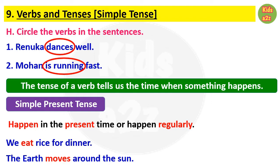Sentences that tell us about things which always remain the same are also written in the simple present tense, like 'The earth moves around the sun.'